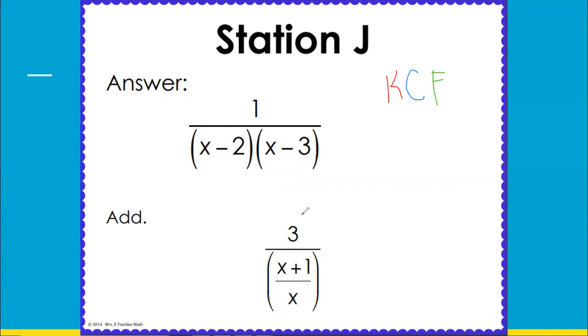So you keep the first thing. Three is just three over one. Change division to multiplication. Flip that second fraction. So that is X over X plus one instead of the other way around. And now you're going to multiply.